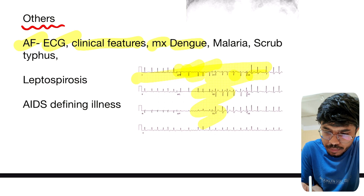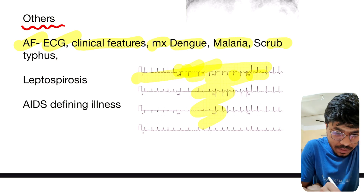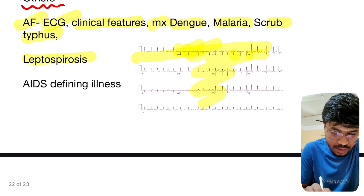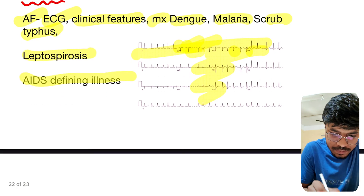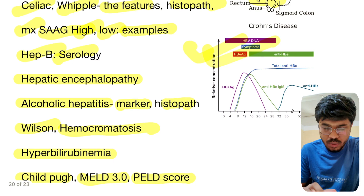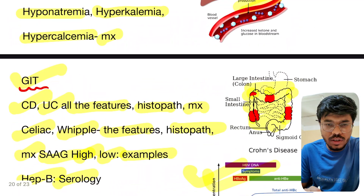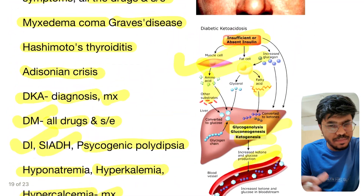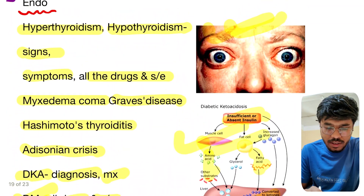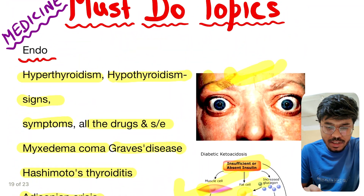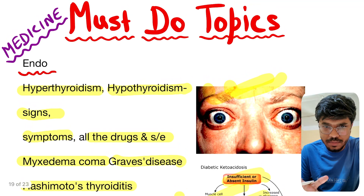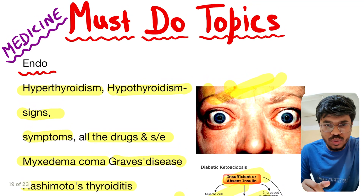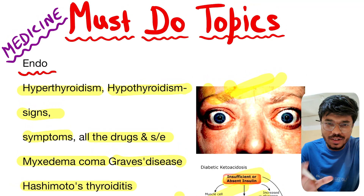Dengue, malaria, scrub typhus, and leptospirosis — important topics. And AIDS-defining illnesses — look at the topics carefully whether you have covered them or not; if not, please cover them. These are extremely important for PG 2023. See you in the next video!